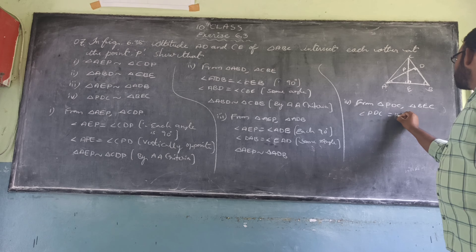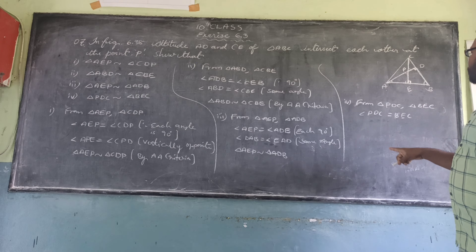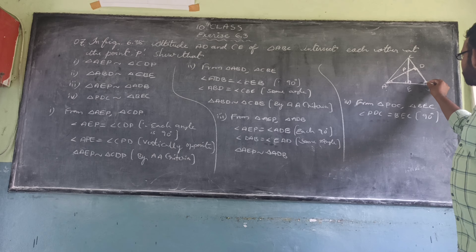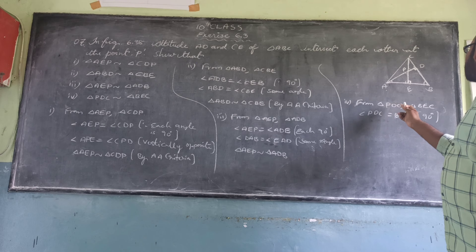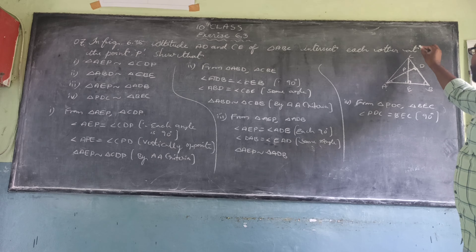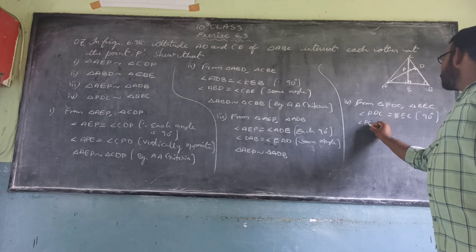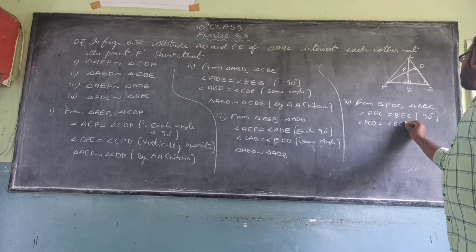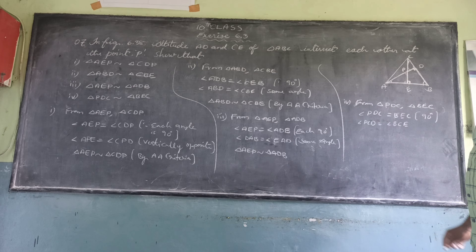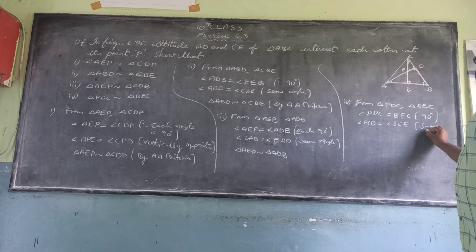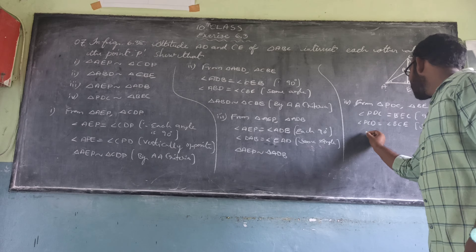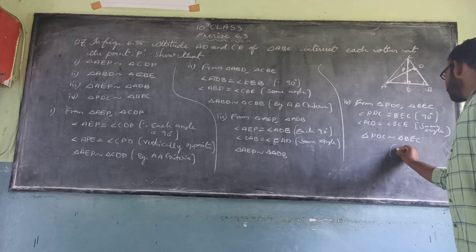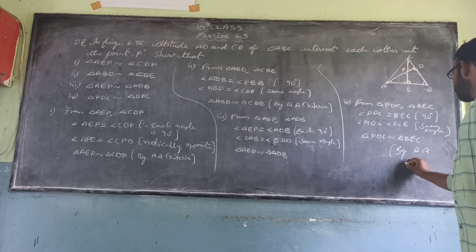Angle BEC is 90 degrees and angle PDC is also 90 degrees, so each angle is 90 degrees. Also, angle C is the same angle in both triangles, so angle PCD is equal to angle BCE. By using the AA criterion, triangle PDC is similar to triangle BEC.